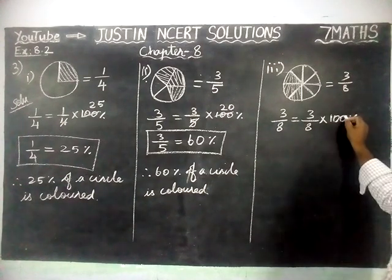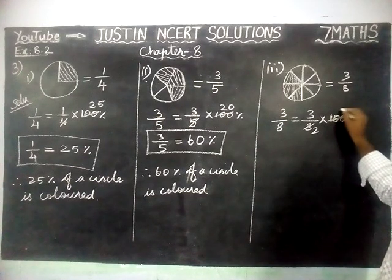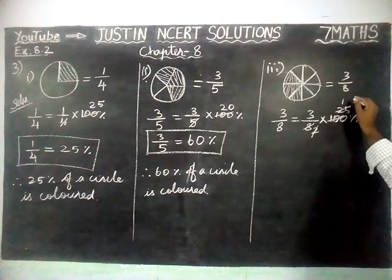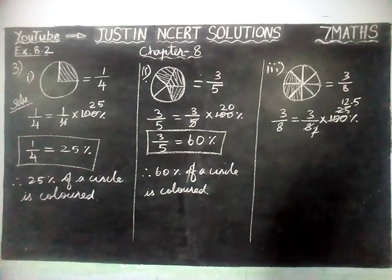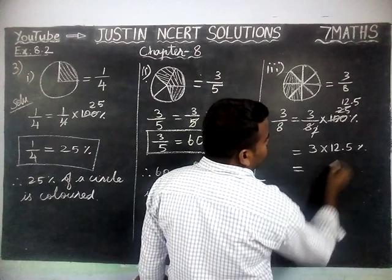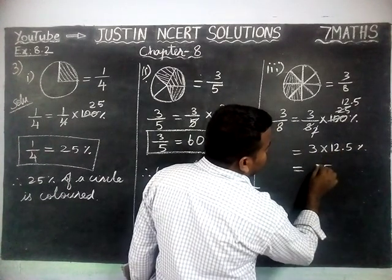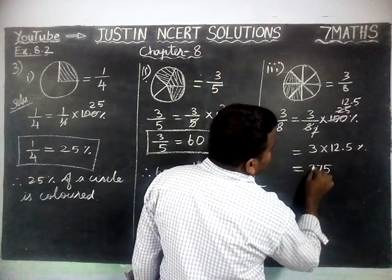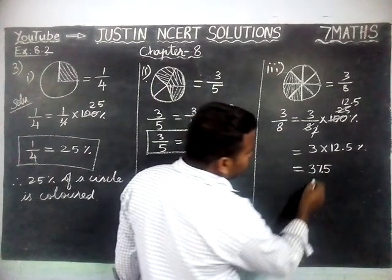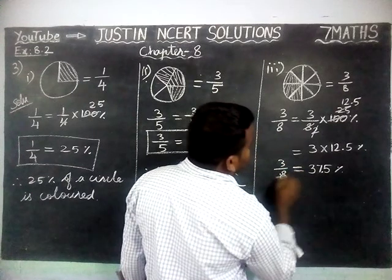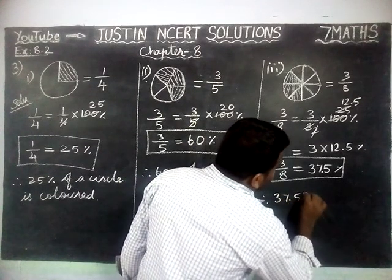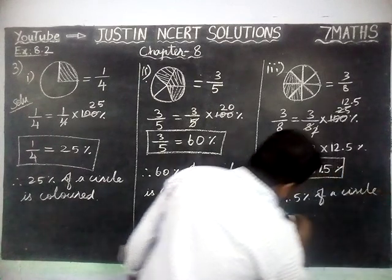We are going to divide by the common divisor 4. 2 fours are 8 and 25 fours are 100. Now we divide again: 2s are 25, giving 12.5. So 3 into 12.5% equals 37.5%. Therefore, 3 by 8 is equal to 37.5%, and 37.5% of the circle is colored.